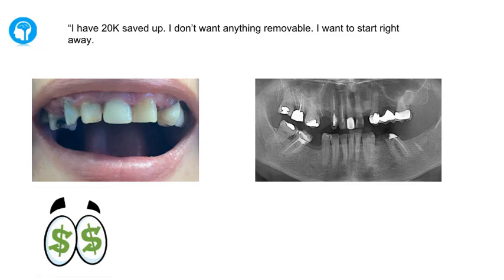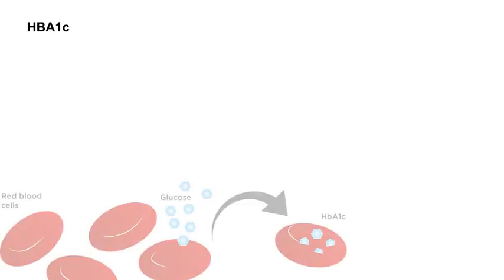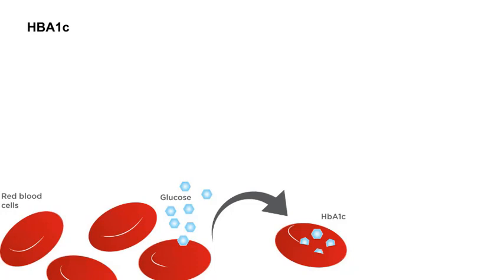You want to ask her about her medical history. This patient tells you she's diabetic — type 2 diabetes. What would you ask her to get a good understanding of her condition? The lab value you want to know is HbA1c. Red blood cells contain proteins called hemoglobin, and when hemoglobin binds to glucose, it's said to be glycated. The HbA1c measures the percentage of hemoglobin that is glycated, reflecting average sugar levels over a period of months — making it a good indicator of how severe a patient's diabetes is.